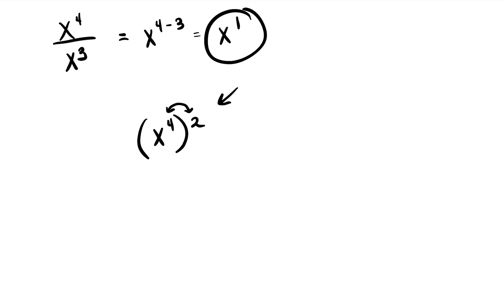Anytime you have an exponent on the outside of the parentheses, you multiply it by the exponent on the inside. So you would do x to the four times two, and that would be x to the eighth power.